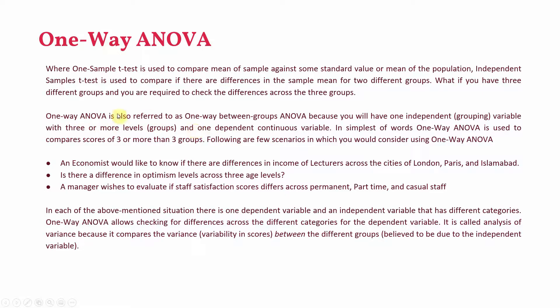One-way ANOVA is also referred to as a one-way between-groups ANOVA because you have one independent grouping variable with three or more levels and one dependent continuous variable. In simplest terms, one-way ANOVA is used to compare scores of three or more groups.